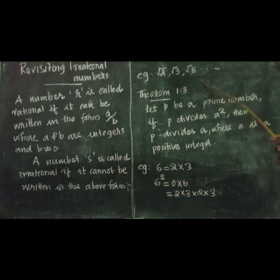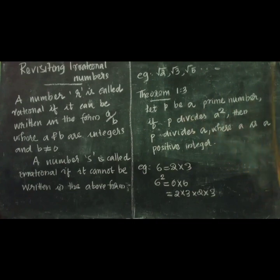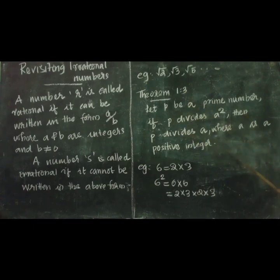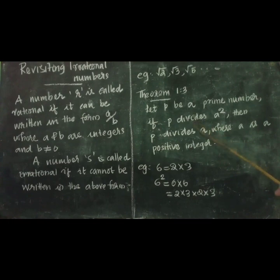So root 2, root 3, root 5, etc. are some examples of irrational numbers. We are going to prove root 2 is irrational using the Fundamental Theorem of Arithmetic. One more theorem we will refer to: let p be any prime number. If p divides a squared, then p divides a, where a is a positive integer. That means if p is a factor of a squared, then p is a factor of a also. For example, if 2 is a factor of 6 squared, then 2 is a factor of 6 also.